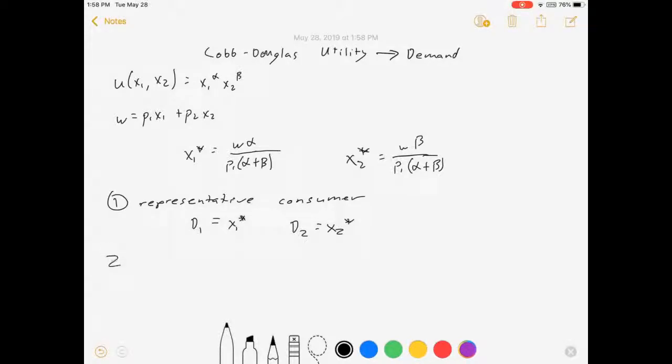The second approach, because we might not always want to do it that way, we could say we have n identical consumers and this one's also pretty simple. The demand for good one is equal to n times x1 star, which let's actually write it out, n w alpha over p1 alpha plus beta. And the demand for good two is equal to n x2 star, which is equal to n w beta over p2 alpha plus beta.